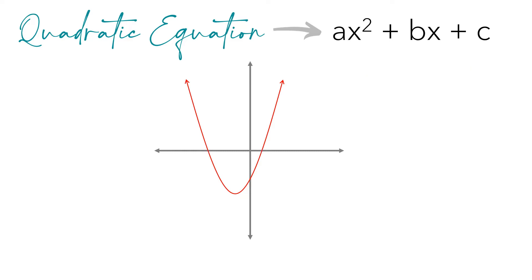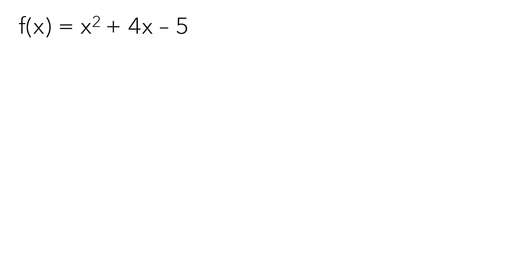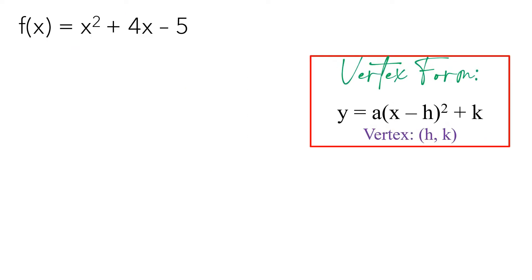However, if you need the vertex of a parabola, it will be easier if you convert the quadratic equation into the vertex form. Let us have an example on how to convert a quadratic function to vertex form, wherein the vertex is (h, k).